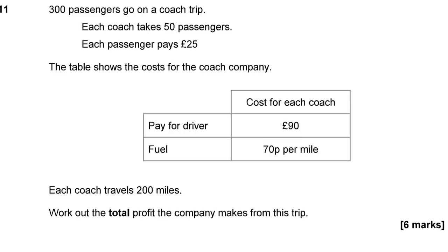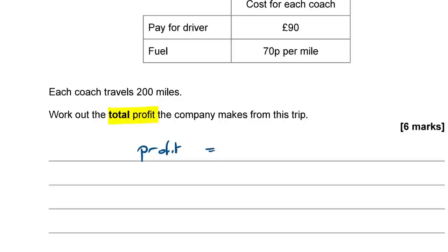Question 11: 300 passengers go on a coach trip. Each coach takes 50 passengers. Each passenger pays £25. The cost per coach is £90 for the driver and 70p per mile for fuel. Each coach travels 200 miles. Work out the total profit. Profit equals income minus expenditure, so let's work out those two things first.